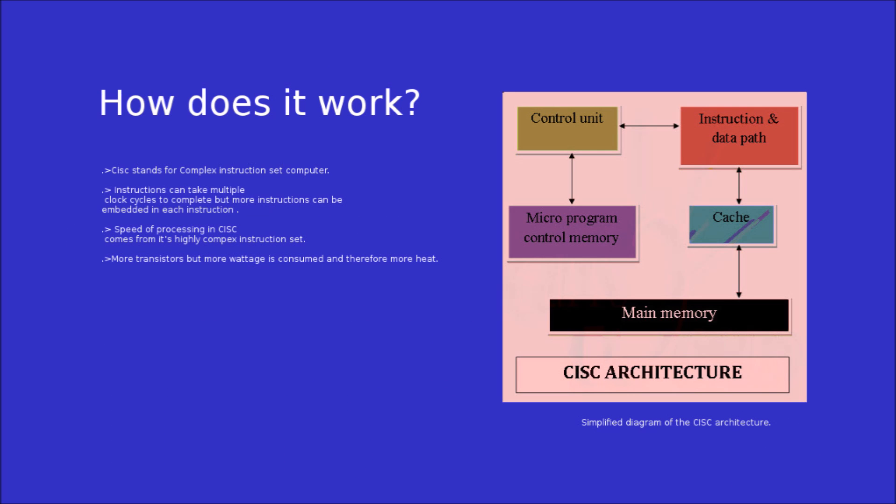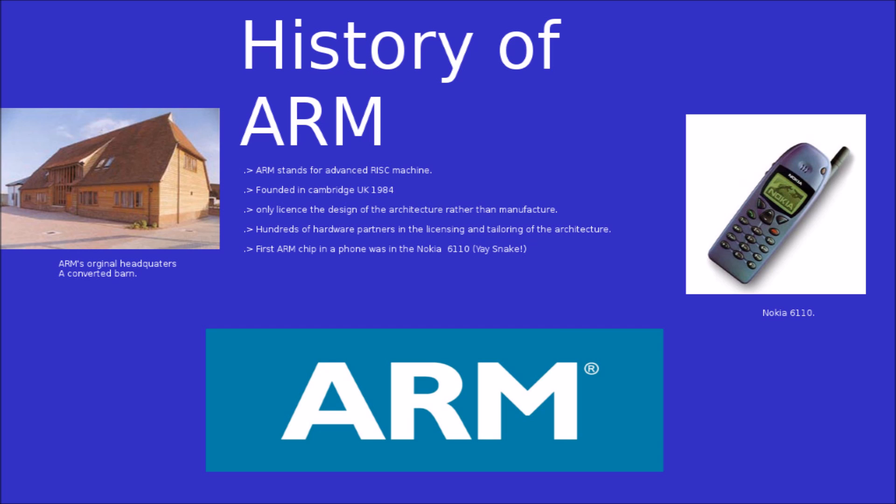How does x86 work? x86 is a CISC-based processor. CISC stands for Complex Instruction Set Computer. Instructions can take multiple clock cycles to complete, but more instructions can be embedded per clock cycle. Unfortunately, on a CISC-based processor there are more transistors, so more wattage is consumed and a higher heat output as well.